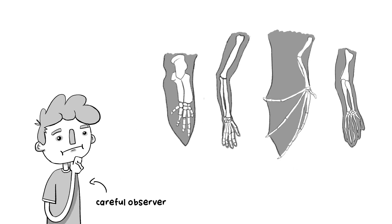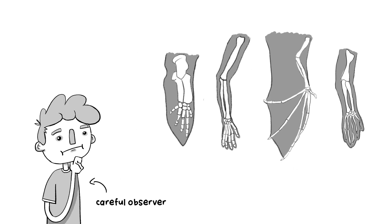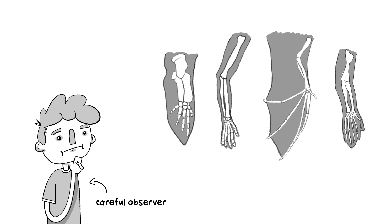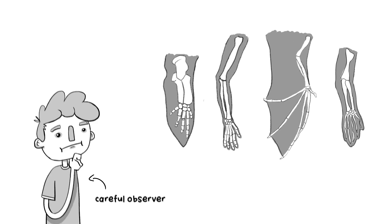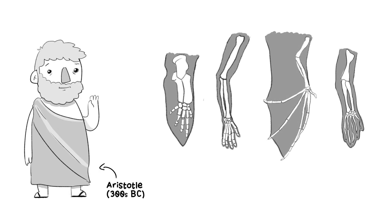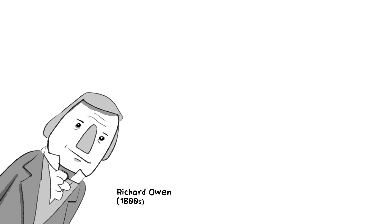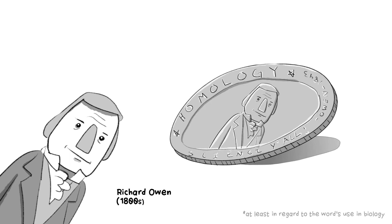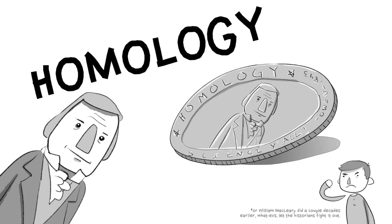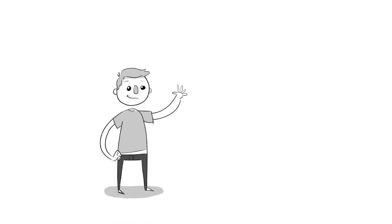Careful observers for a long time have noticed that very different creatures have very similar bits. These sorts of ideas date all the way back to Aristotle. If we fast forward to the 1800s, anatomist Sir Richard Owen coined a term for these observations: homology. Take a look at this guy — he's got an arm that starts with one bone, followed by two bones, and then lots of tiny bones for the wrist and fingers and whatnot.